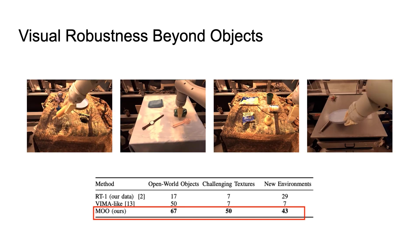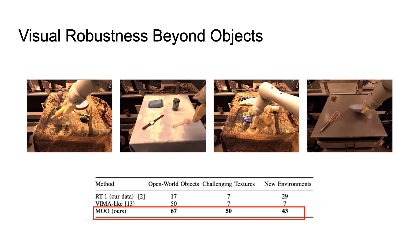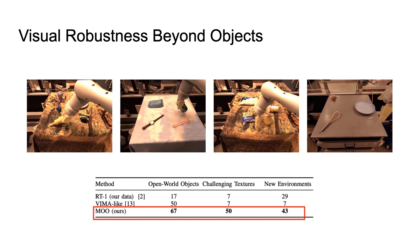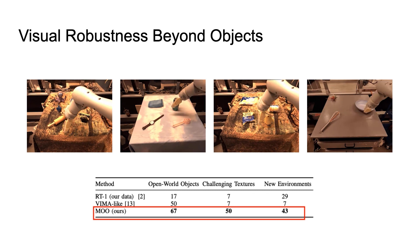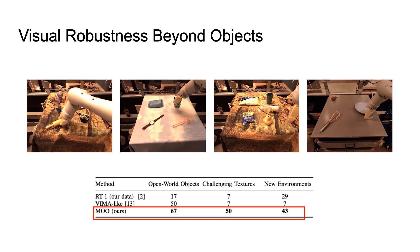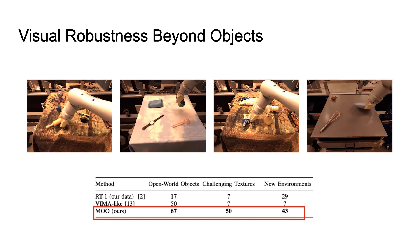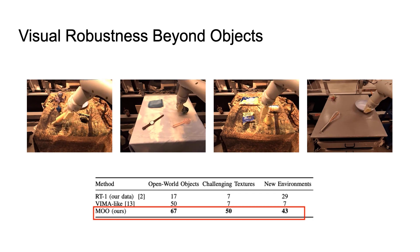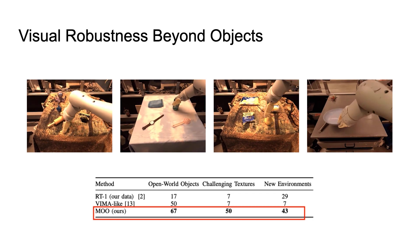Going beyond objects, we also test MOO's robustness to visual challenges such as novel backgrounds, distractors, environments, additional objects, and combinations of these factors of variation. Some of these evaluation scenarios are particularly difficult, where objects of interest almost camouflage into patterned tablecloths. Even in these challenging situations, we find that MOO can robustly accomplish many manipulation tasks.